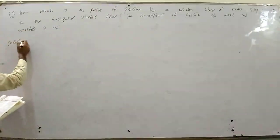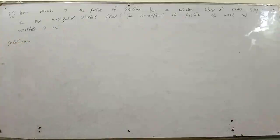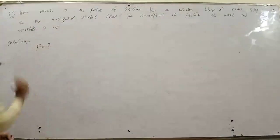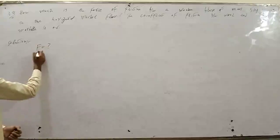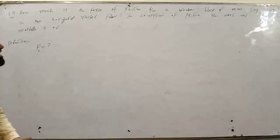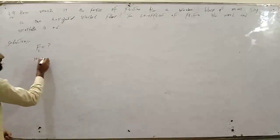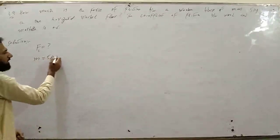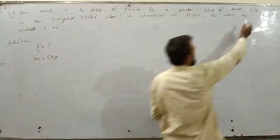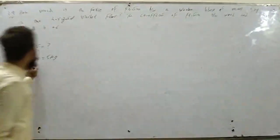Solution: how much is the force of friction - यानि force find करनी है। Force of friction Fs find करेंगे। एक wooden block था जिसका mass 5 kg है - M is equal to 5 kg। Mass of a wooden block दिया हुआ - 5 kg।